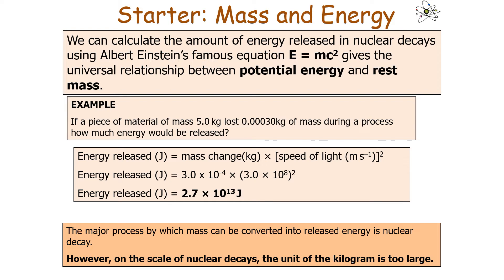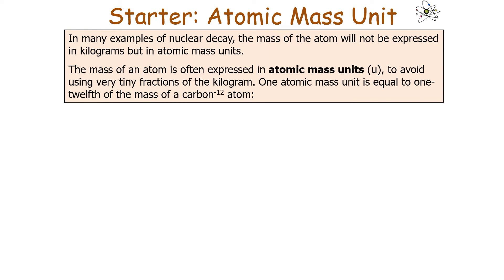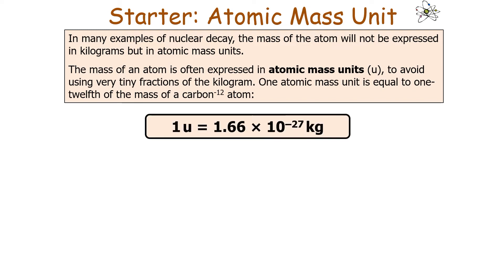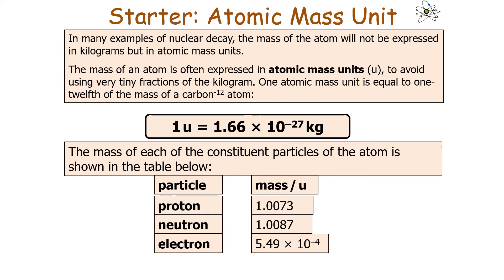On the scale of nuclear decays, the kilogram is too large a unit. Instead we use atomic mass units, then convert back to kilograms when using E equals mc squared. The mass of an atom is expressed in atomic mass units U to avoid very tiny fractions of kilograms. One atomic mass unit is defined as one twelfth of the mass of a carbon-12 atom, where 1U equals 1.66 times 10 to the minus 27 kilograms. The masses of constituent particles are: proton = 1.0073U, neutron = 1.0087U, and electron = 5.49 times 10 to the minus 4 U.